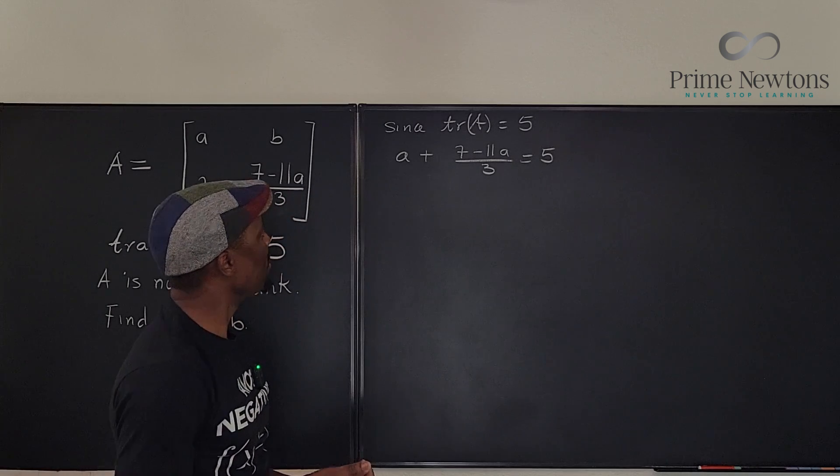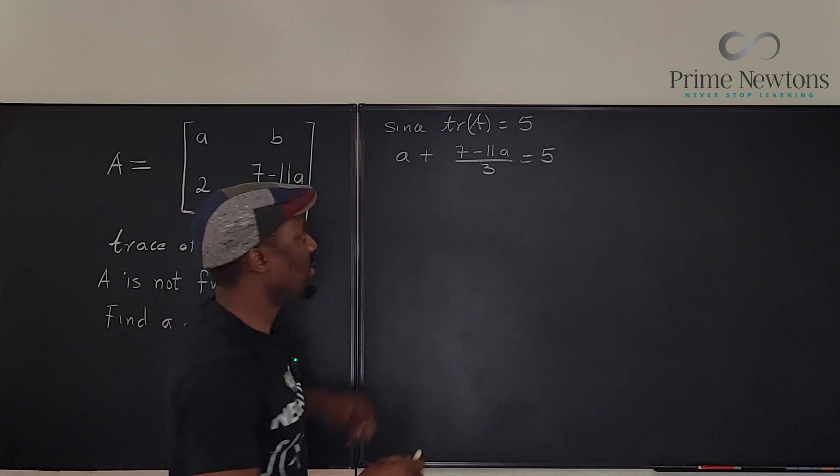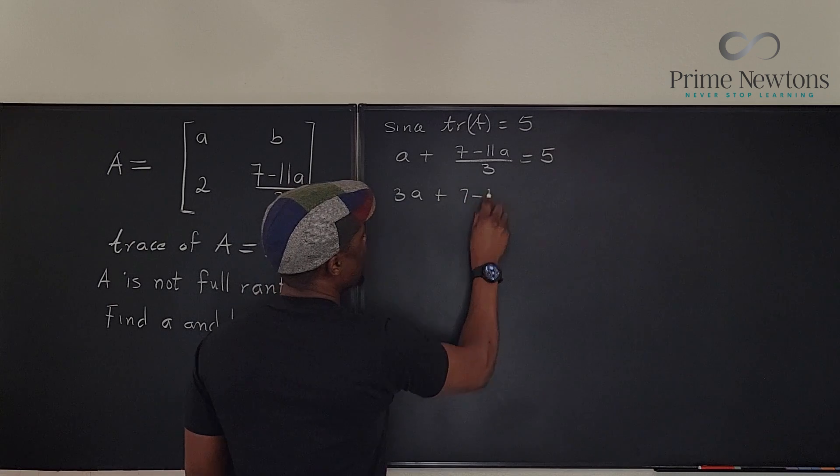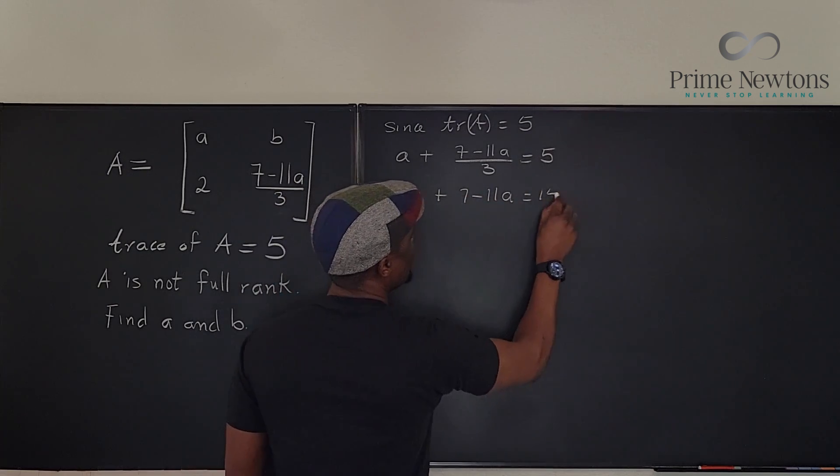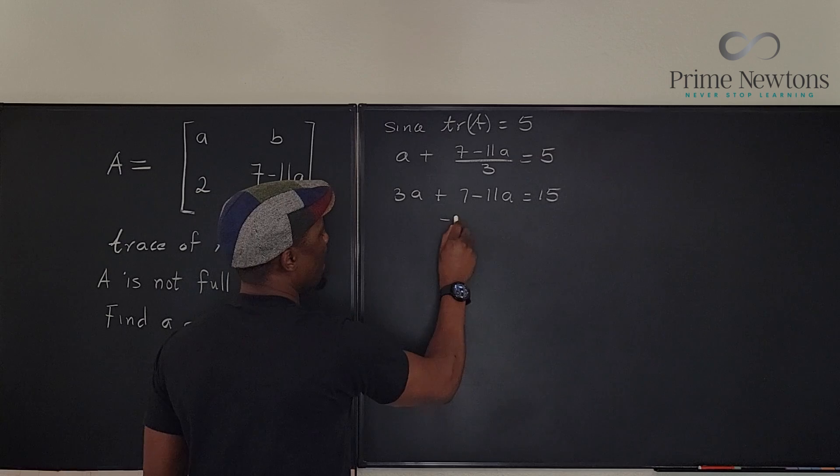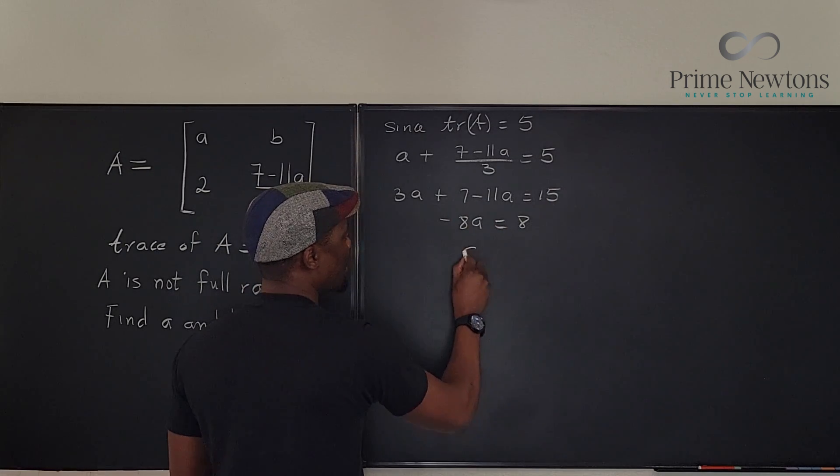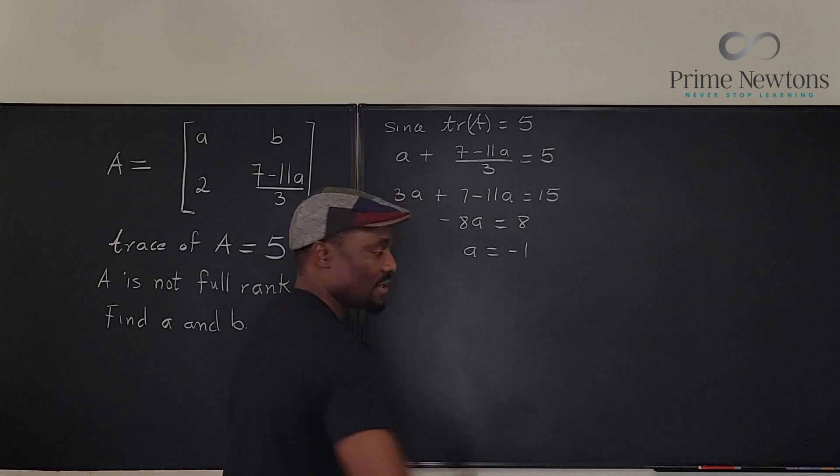So what I'm going to do is multiply every term by three just to get rid of the fraction. So I have three a plus seven minus 11a equals 15. If I put these together, I get negative eight a and move the seven over, I get eight. That means my a equals minus one.